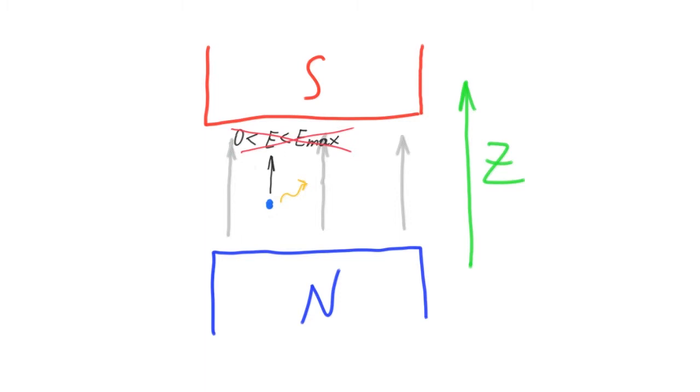But this does not happen. For a given external magnetic field, the energy of an emitted photon is always the same.